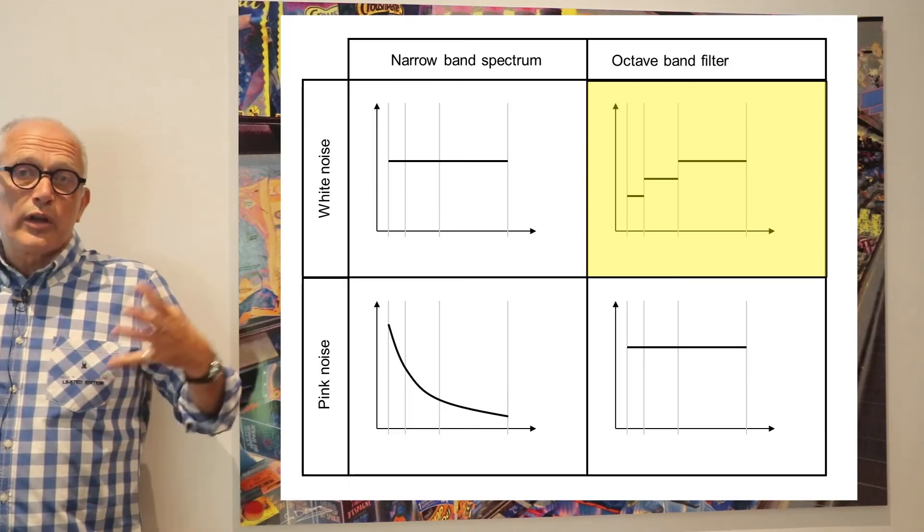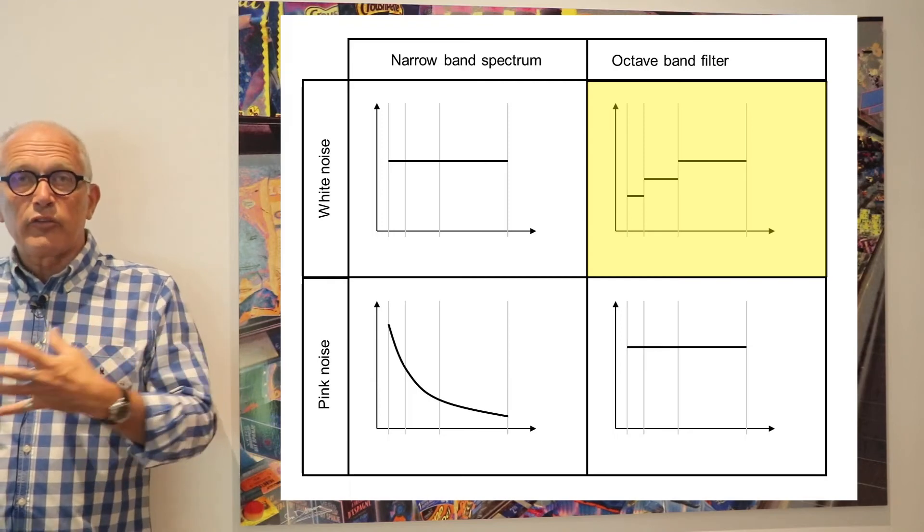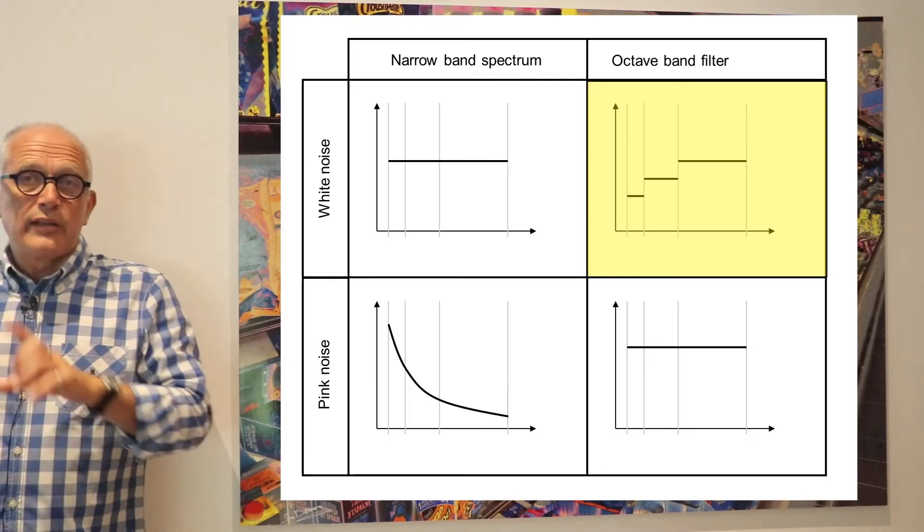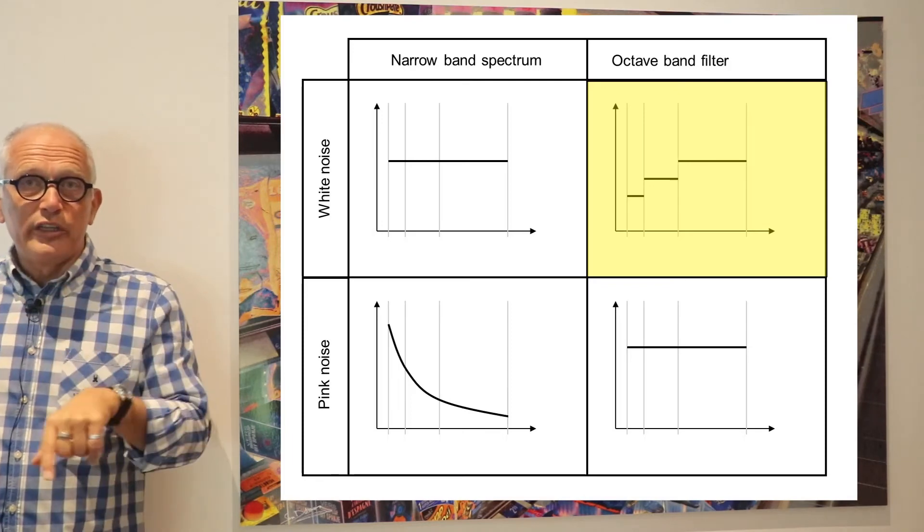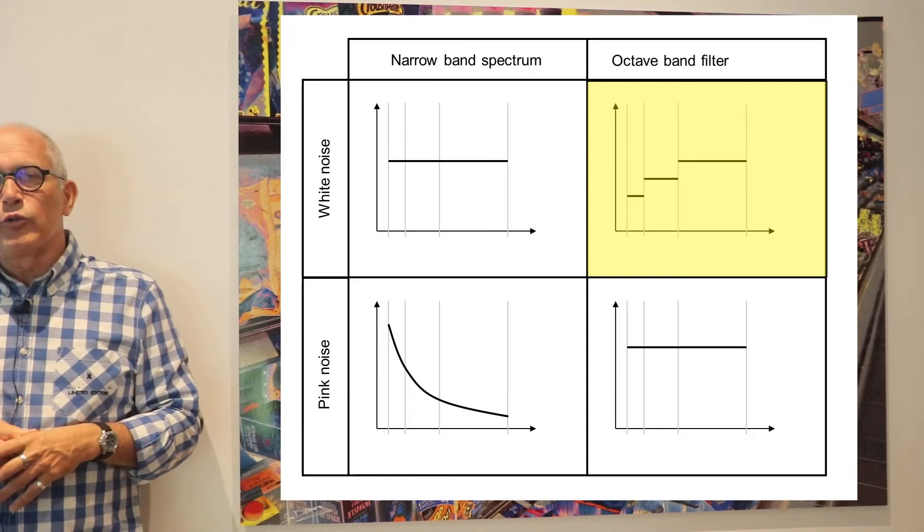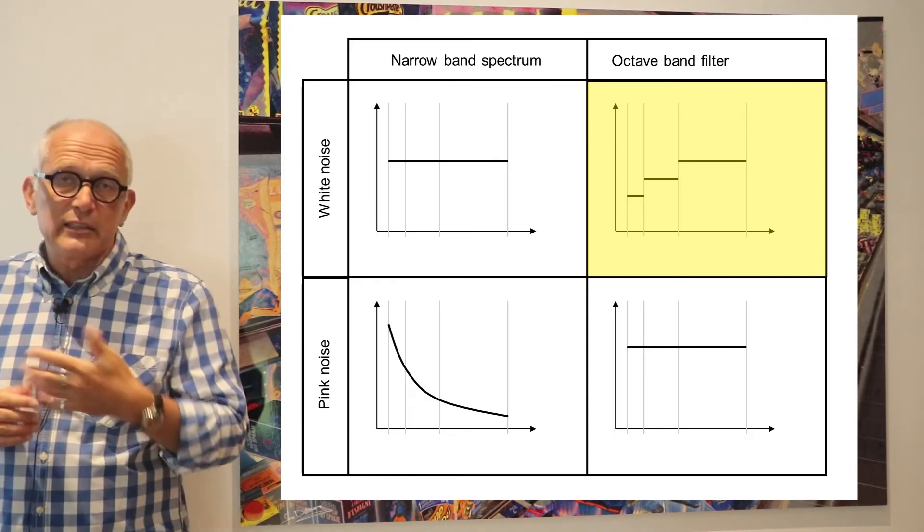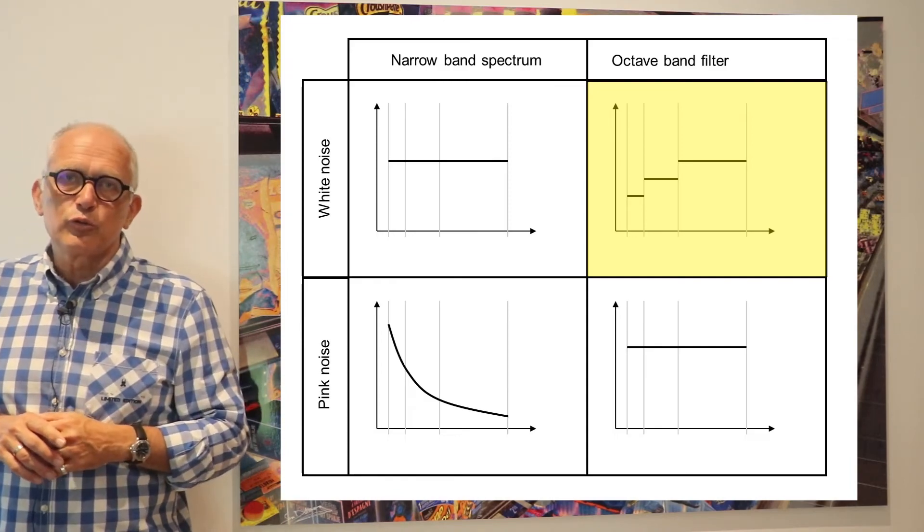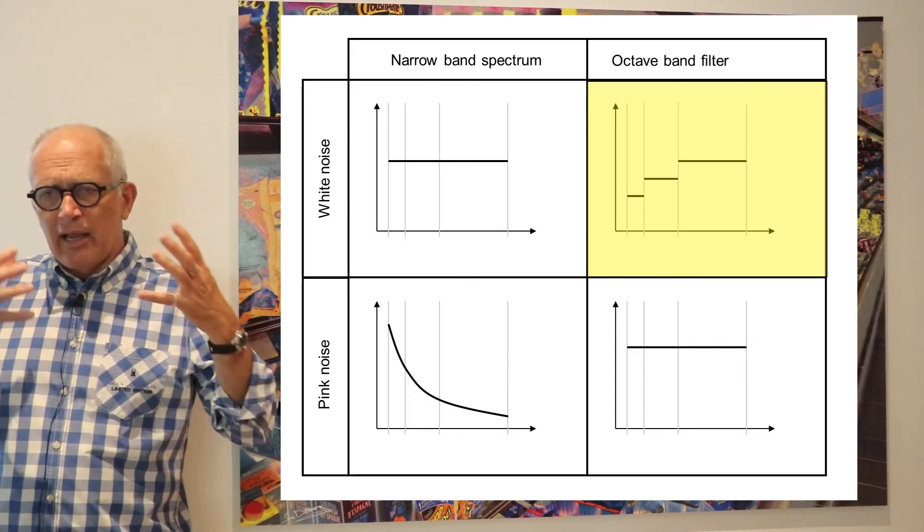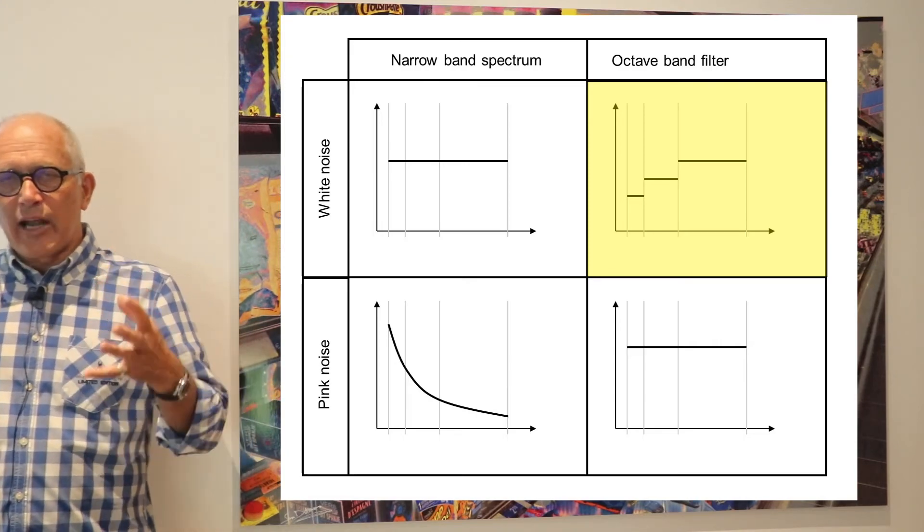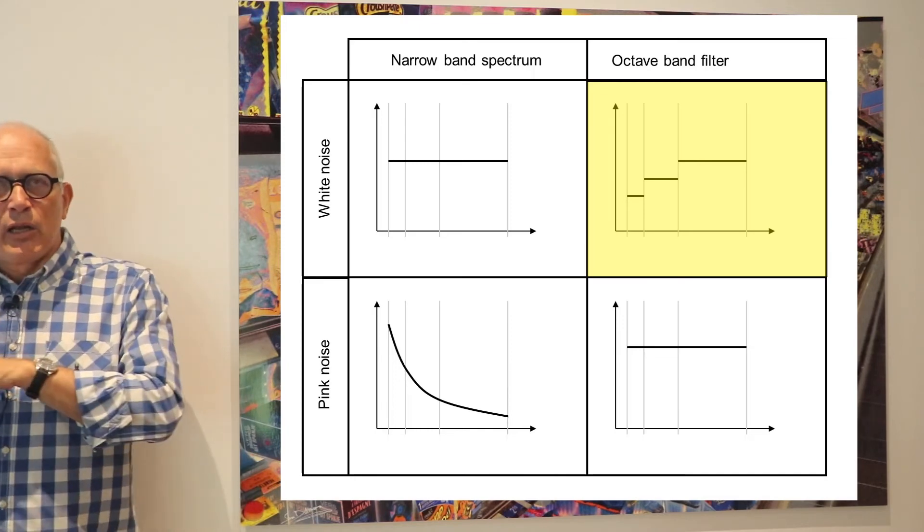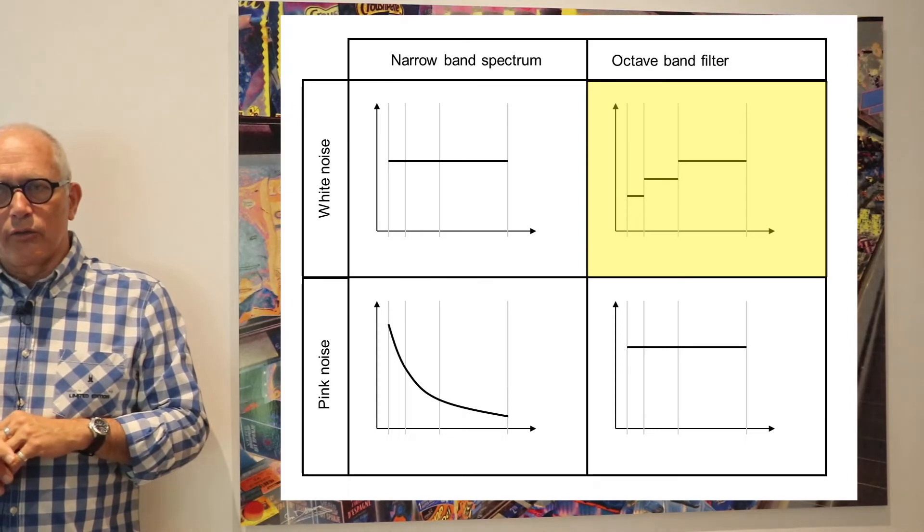Because there is more and more energy in the successive bands, simply because they are wider. And so the area of the rectangle under the curve within a given octave band increases by a factor of two each time. So a white noise has a flat narrow band noise and has a steadily increasing octave band spectrum.